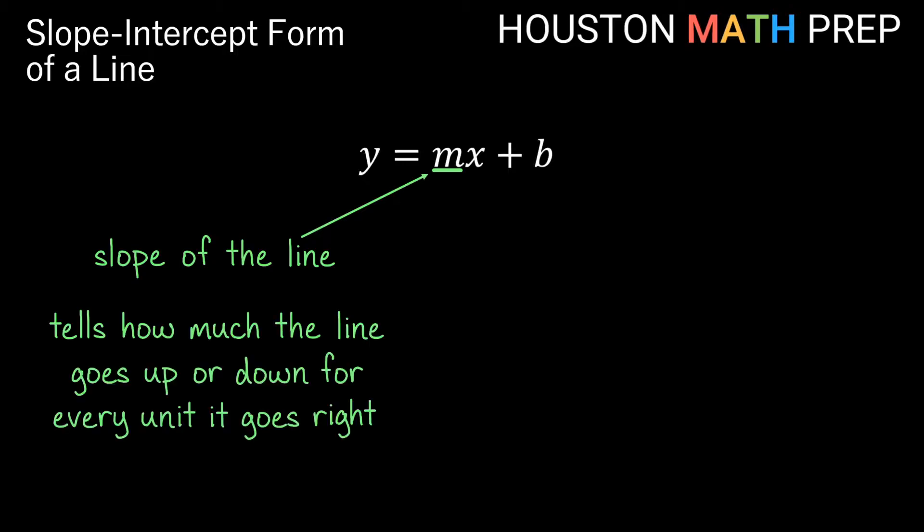The slope of a line basically tells us how much the line is going up or down for each unit that we go over to the right. So if we have a positive slope, the line is going up as we move to the right. If we have a negative slope, a negative m, then the line is going down as we go to the right.